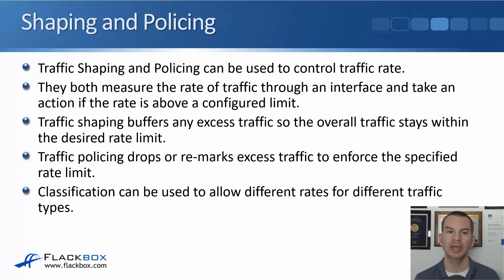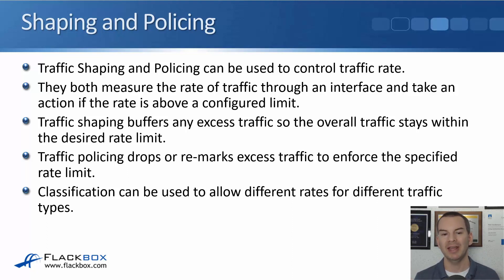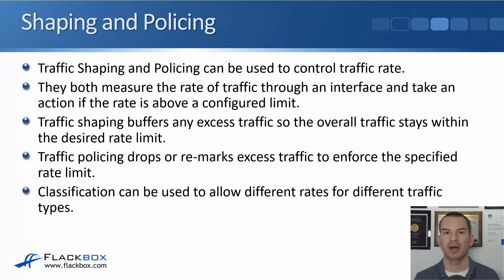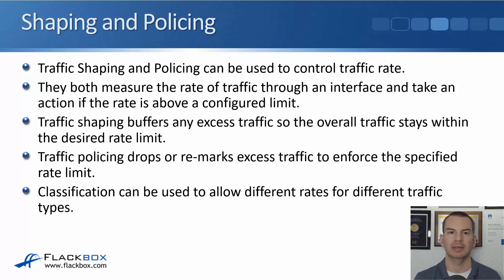Classification can be used in your shaping or policing policy to configure different rates for different traffic types. For example, you could allow a different rate for traffic marked as DSCP-EF than for traffic marked as AF-31. That is optional — you can apply the rate to the aggregate of all traffic, or you can have different rates for different traffic types.